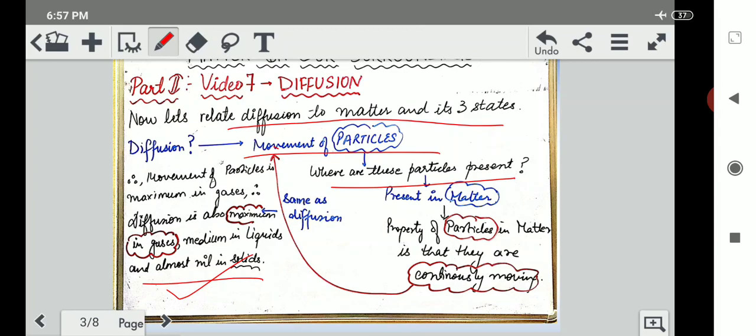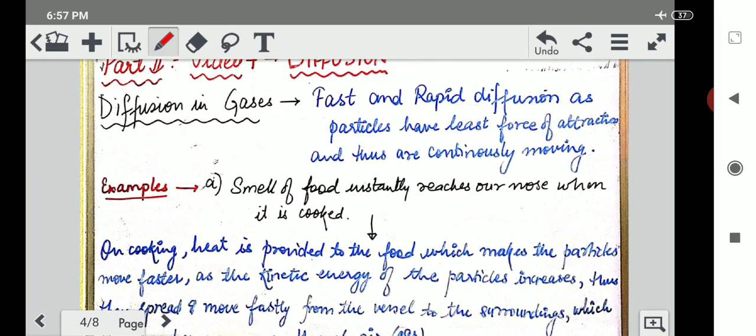Thus the property of particles in matter is that they are continuously moving. And even we have studied the third property of particles that they are continuously moving. So that movement only will bring the effect of diffusion. Now we will shift on to diffusion in gases.